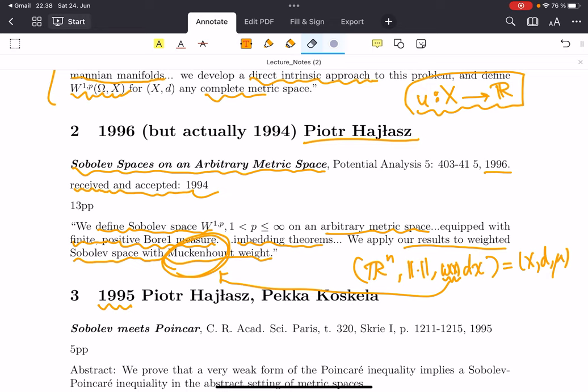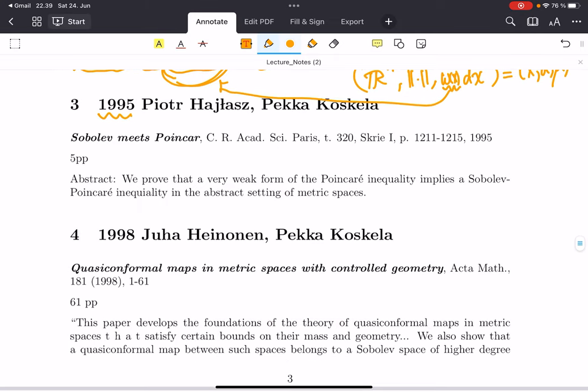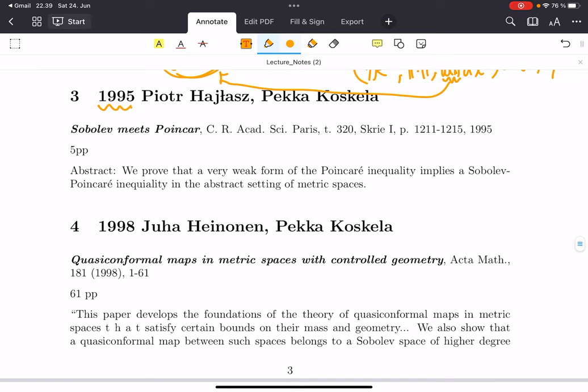The whole paper is only 13 pages. In the paper from 1995 by Piotr Hajłasz and Pekka Koskela, the paper titled 'Sobolev meets Poincaré,' which is only five pages long, they prove that a very weak form of Poincaré inequality implies the much stronger Sobolev-Poincaré inequality. Remember for the Poincaré, you take the average of the function from the function and you integrate, and this should be bounded by a constant and then gradient of the function, whatever you are using for gradient—Hajłasz gradient or upper gradient.